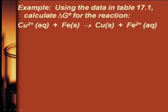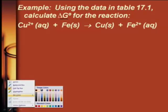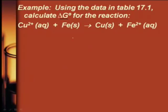Let's see if we can find delta G for this reaction. The first step is to split it up into half reactions. So I've got the iron going to iron 2 positive, plus 2 electrons.